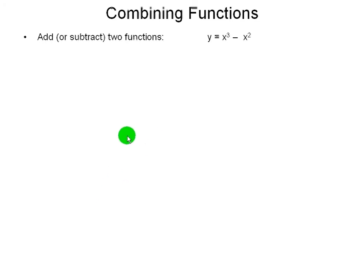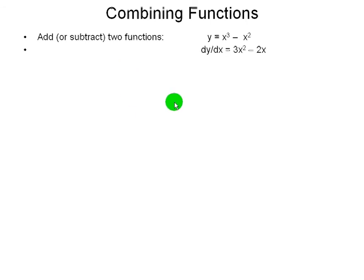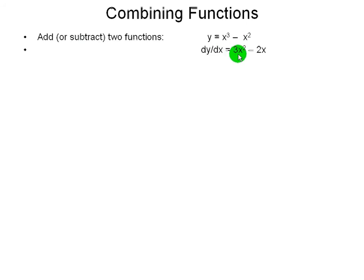One thing we can do with two functions is add or subtract them. It's quite easy to find the derivative: you just find the derivative of each function individually and either add or subtract depending on what's done in the original function. So x cubed becomes 3x squared, and x squared becomes 2x, and you subtract.